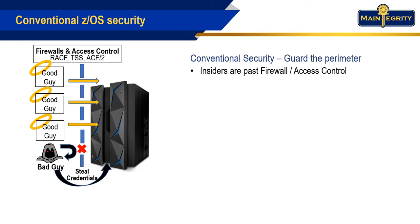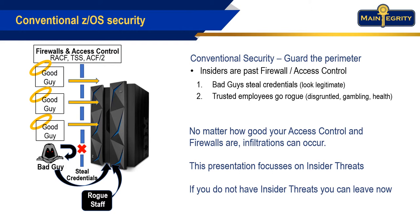With tried and true conventional security measures — RACF, Top Secret, ACF2, and firewalls — what you're doing is limiting access to known and trusted people. However, bad actors can steal credentials or get them from the dark web, and previously good employees can succumb to addiction or gambling problems and sell you out. Insiders are past RACF and the firewall. A criminal with stolen credentials is indistinguishable from a legitimate employee, and the consequences can be devastating.